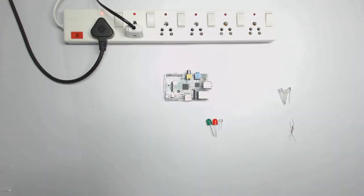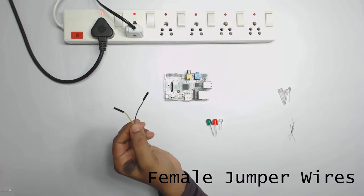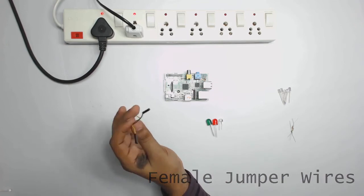The second one is female jumper wires. In order to connect the LED to the GPIO pins, total jumper wires required is 15.